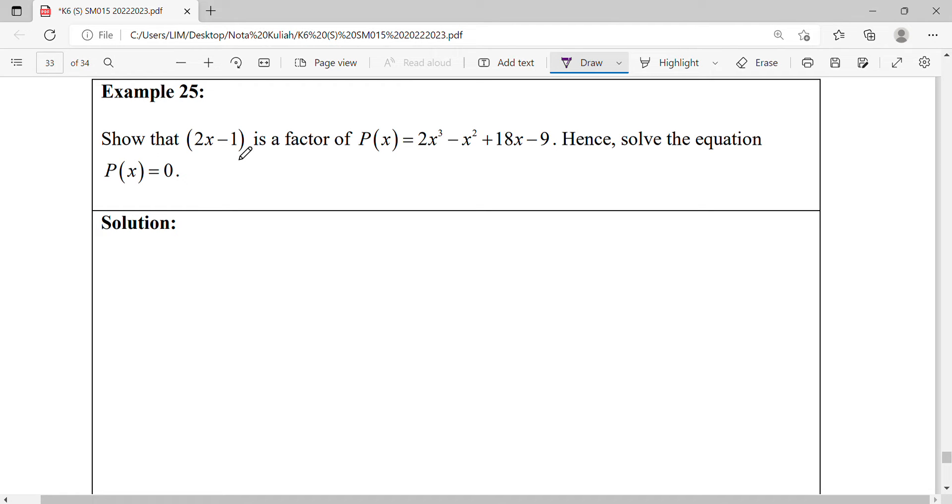This question asks to show that 2x minus 1 is a factor for this polynomial and then solve the polynomial which is equal to 0. For the first part, we use the factor theorem by finding the x value.